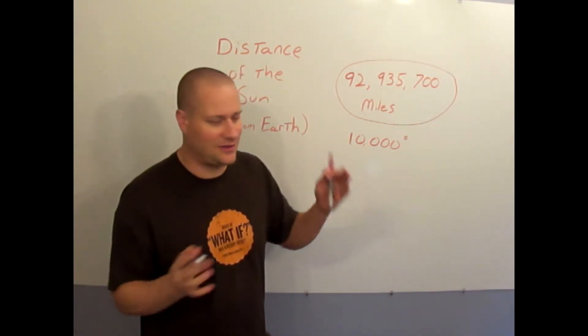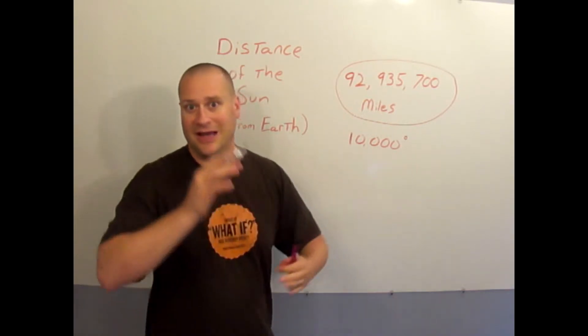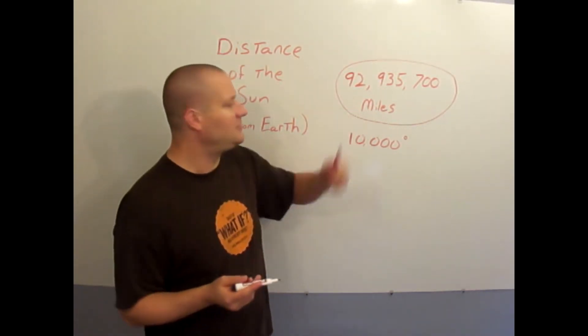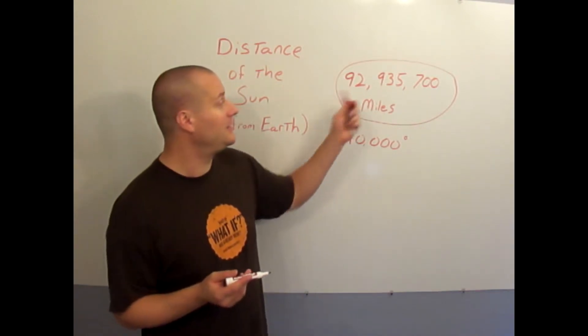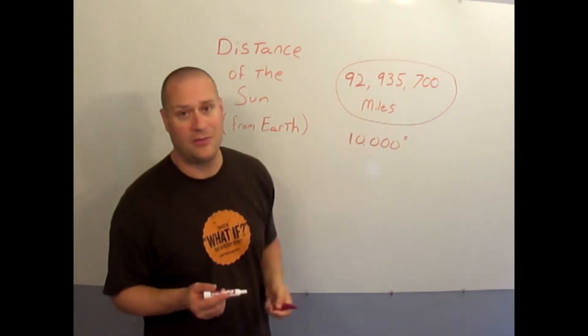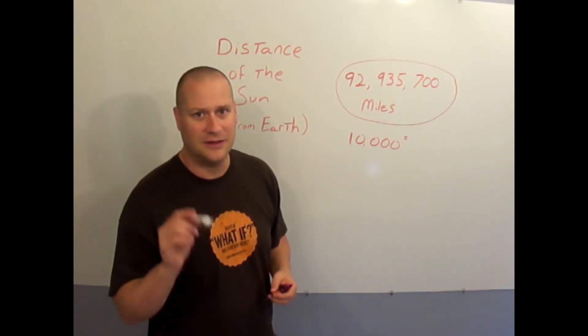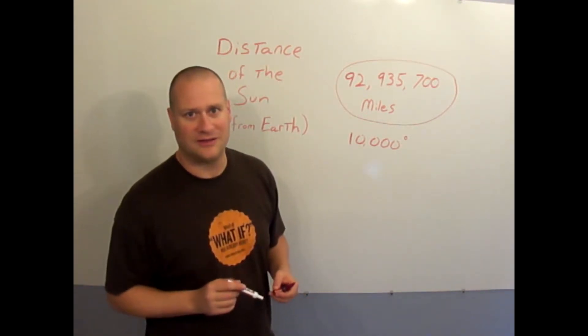It's the perfect distance so that we're not too hot and burned up and we can live, and we're not too cold that the whole planet freezes and we die. 92 million 935,700 miles is the perfect distance that God placed us away from the Sun so that life could exist on planet Earth.